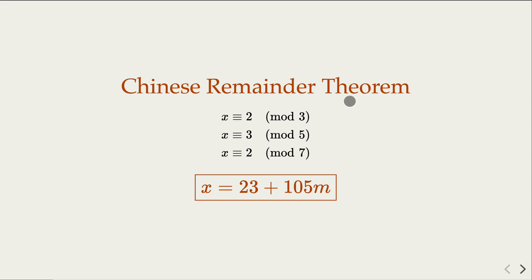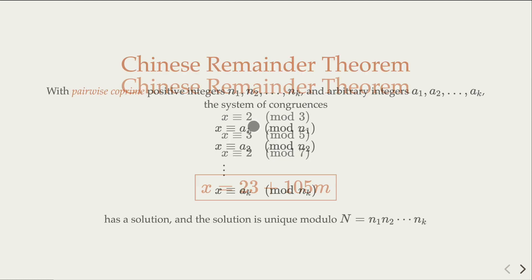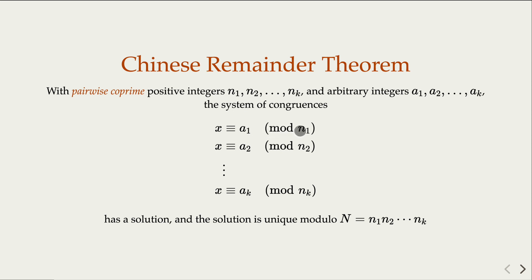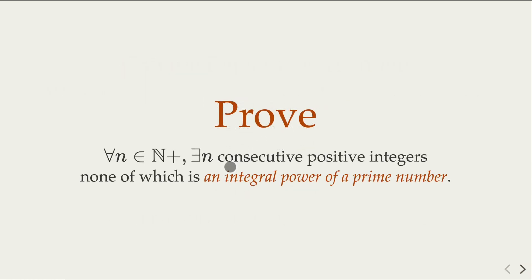Here, what I'm gonna do is we try to use this theorem to construct n consecutive integers. The way to do it is, we need to figure out what's the modulus, what are those n's, and what those a sequence here, a₁ to aₖ. What we do is pick the appropriate modulus and construct a linear congruence equation.